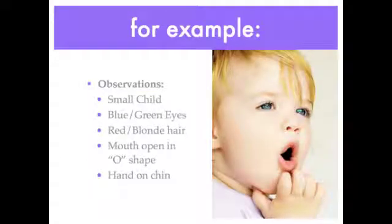For example, if you were making observations of this picture of a baby, you might say it's a small child. It has blue or green eyes, it has reddish blonde hair, its mouth is open in an O shape, and its hand is on its chin.